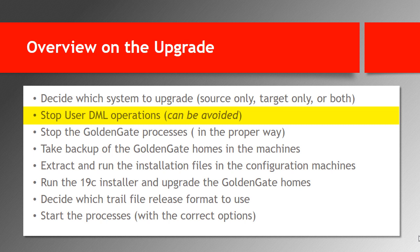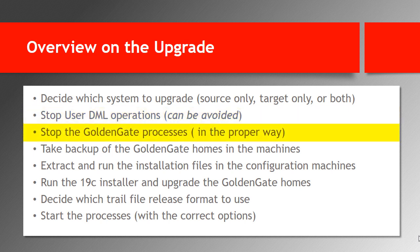After making this decision, you need to decide about stopping user DML operations. If the business allows it, it might be better to stop user operations during the upgrade. If the business doesn't allow it, you can avoid stopping user operations. I personally tested upgrading Oracle GoldenGate 12C to 19C without stopping user activities, and it worked just fine. After deciding on stopping user DML operations, stop the GoldenGate processes properly and in the correct order. Start with shutting down the extract, then the pump, and finally the replicate processes. The processes should be stopped even if we want to upgrade the source system only or the target system only.